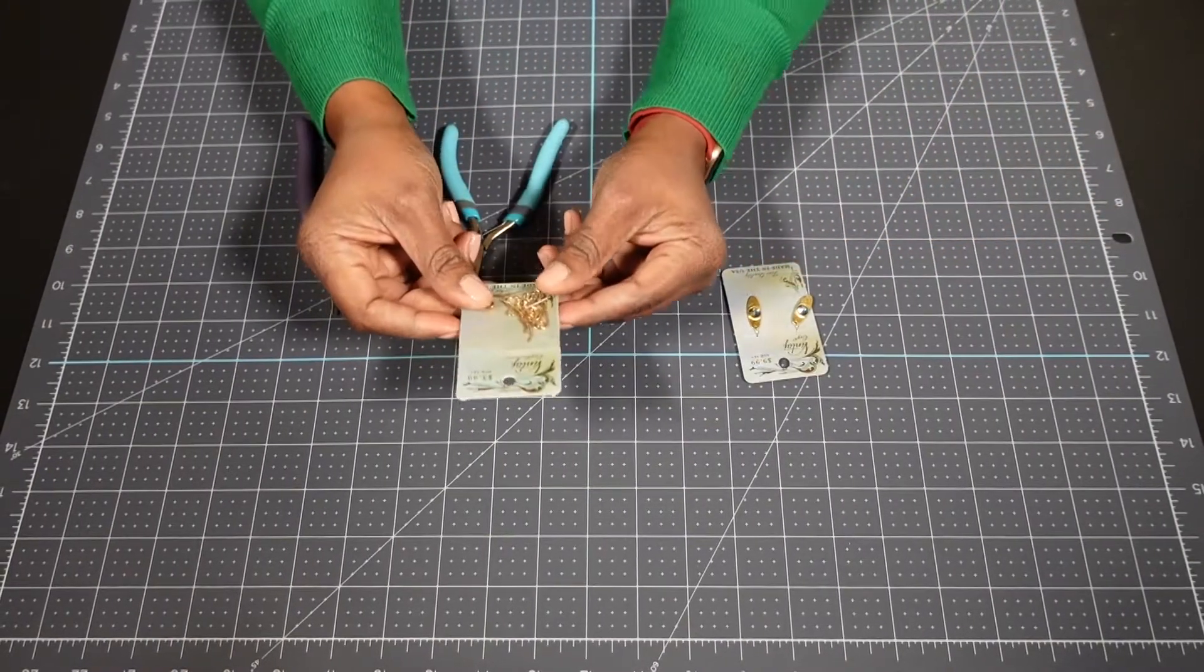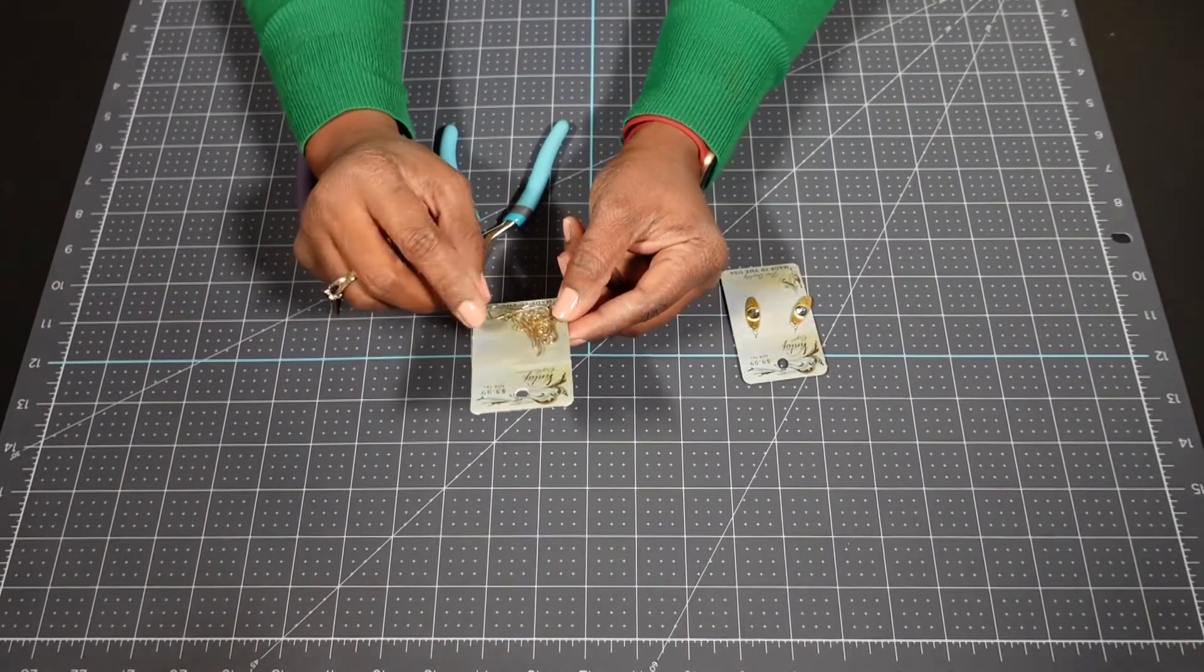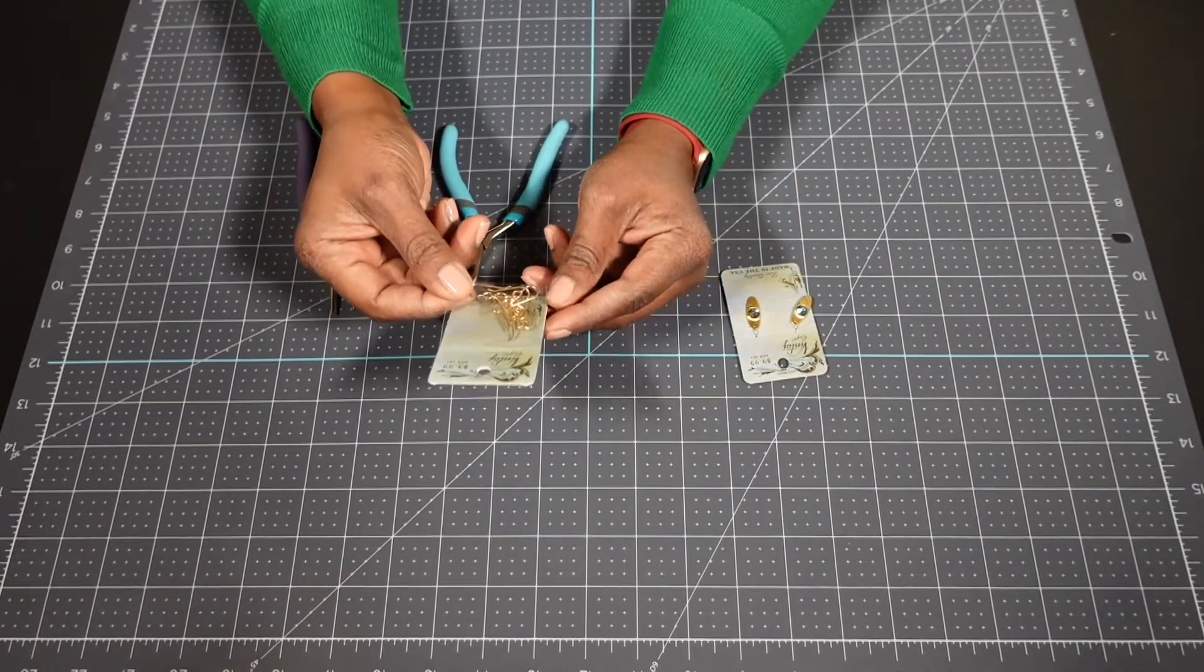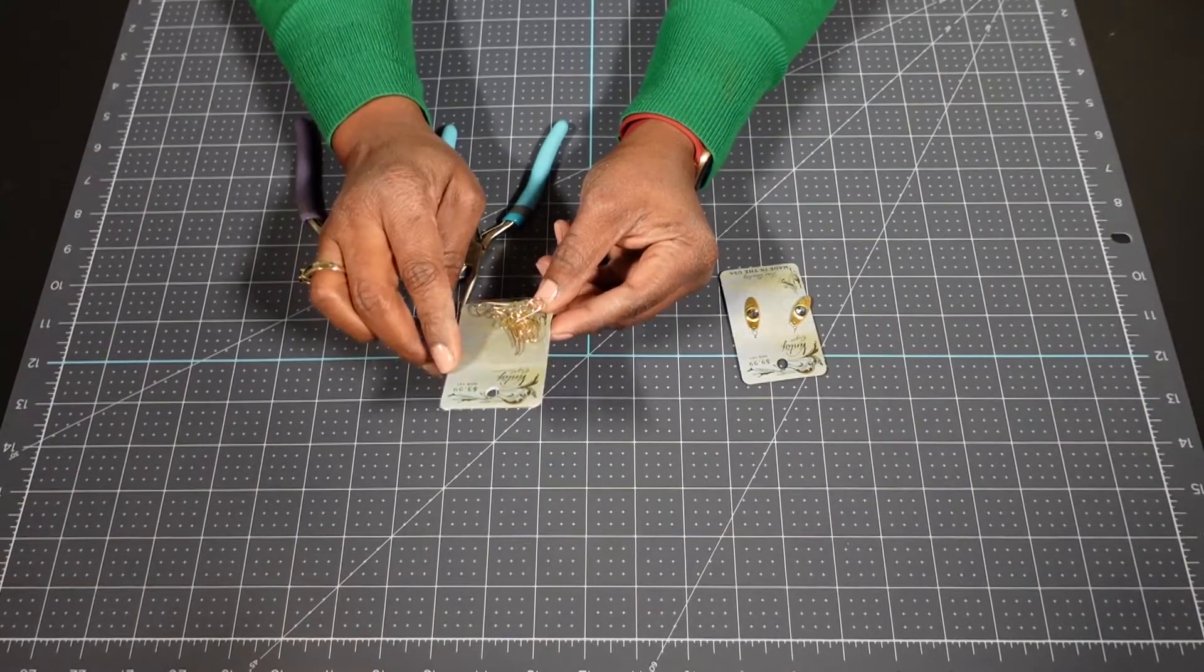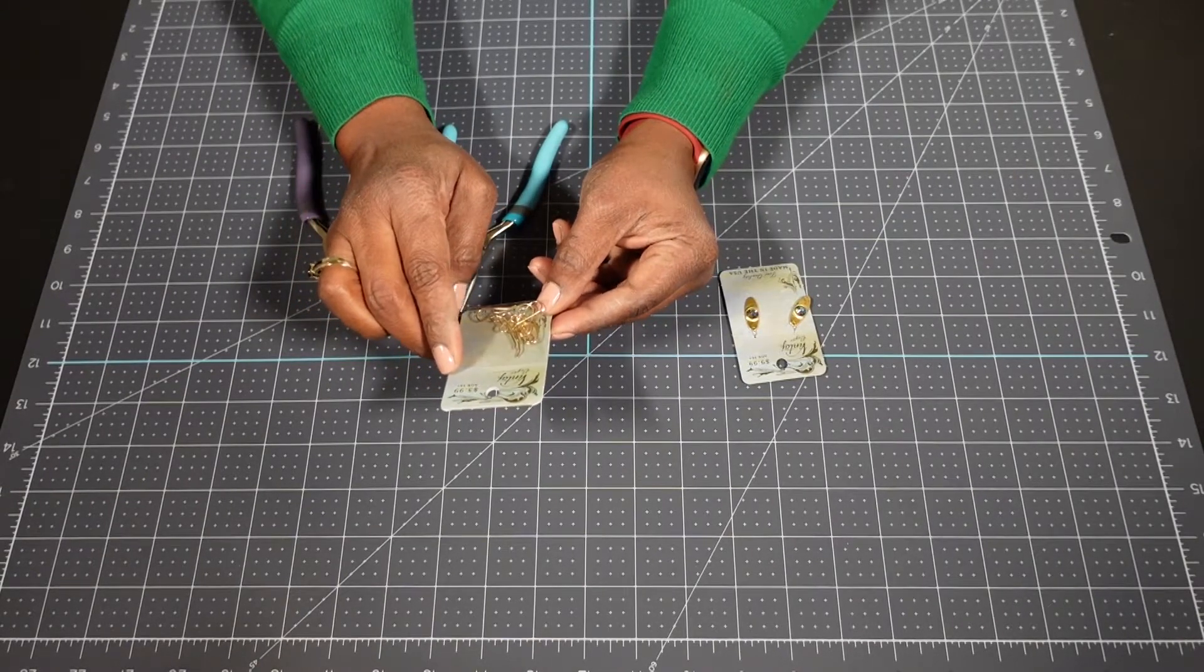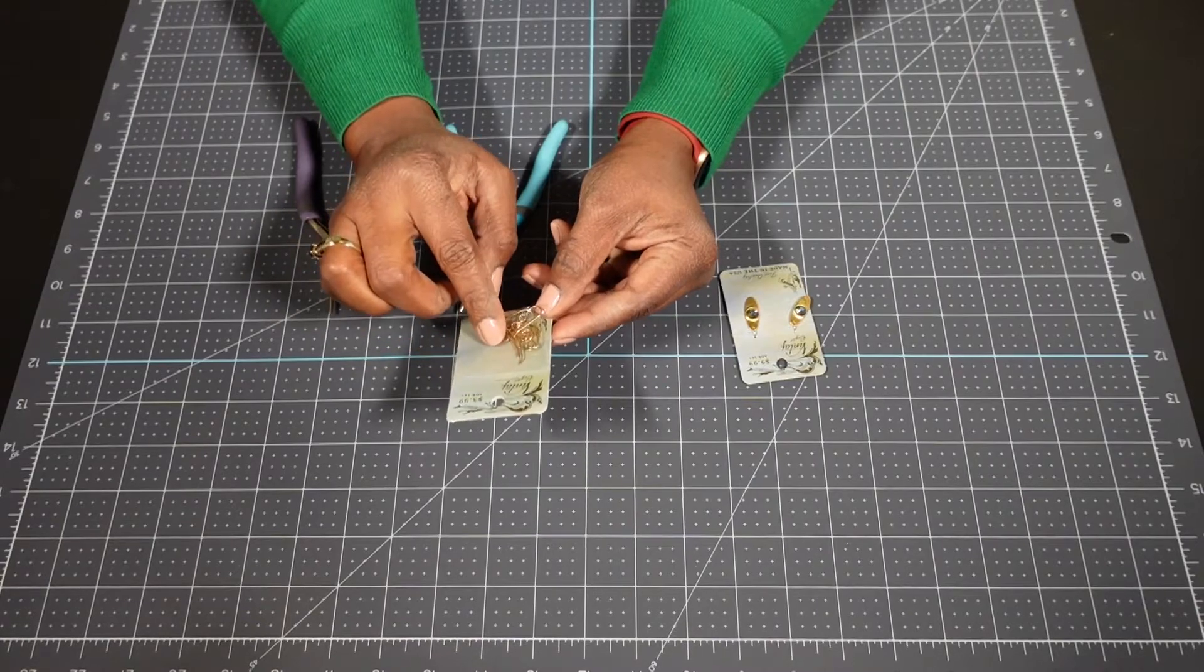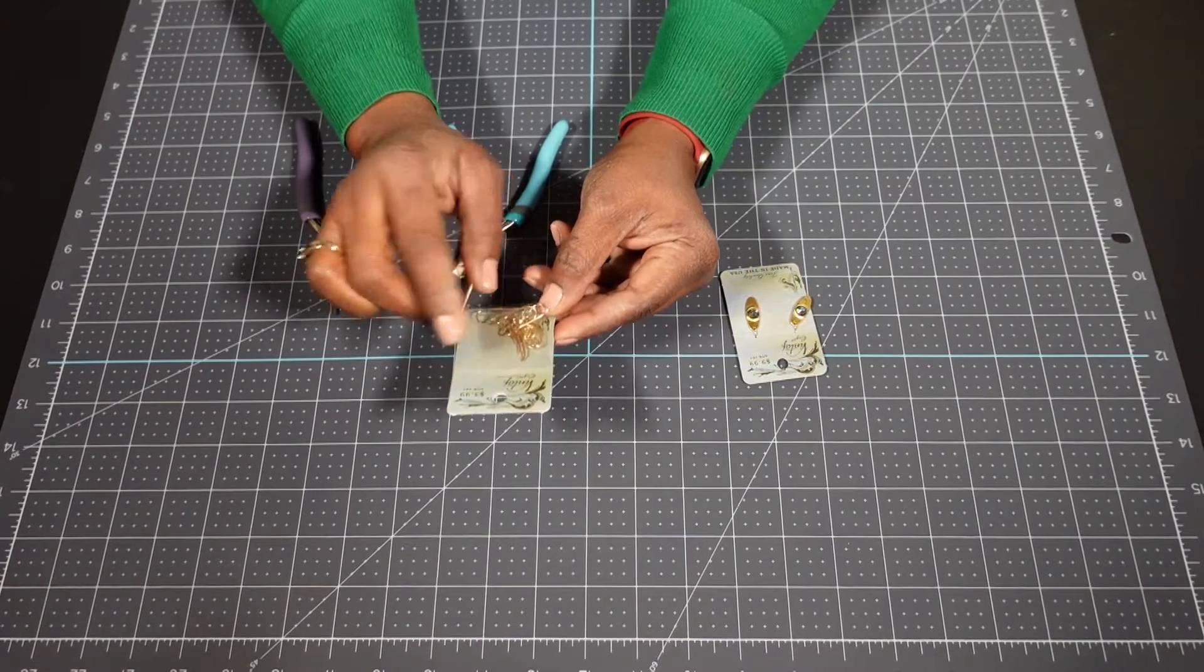You are going to need some wire hooks, some ear wire. They call them wire hooks or ear wires depending on who's selling them. These were $3.99, but I got them for 50% off. So they cost me about $2 for a set of eight. This will make four sets of earrings.